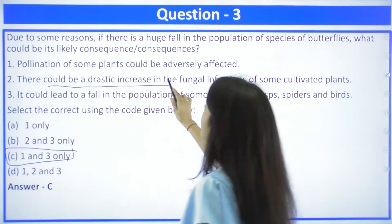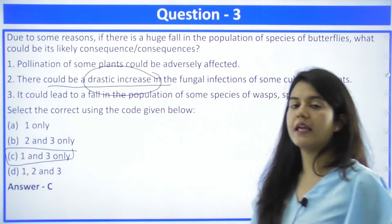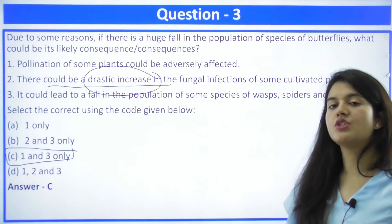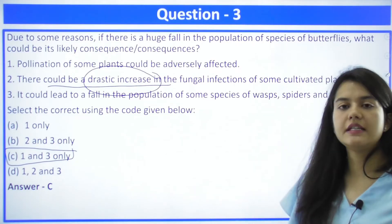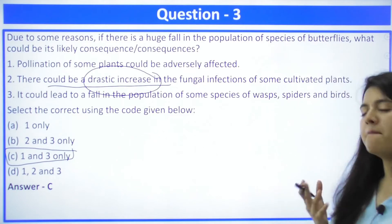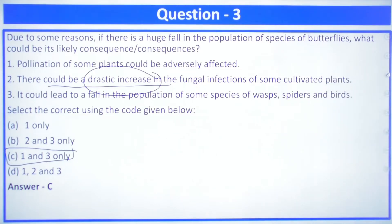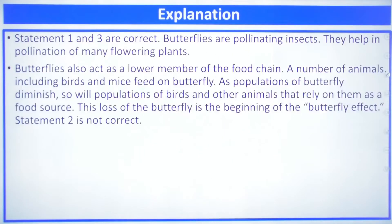The second statement about a drastic increase is incorrect. When you encounter extreme statements in UPSC questions, they are always wrong. You might see a mild increase in fungal infections, but there would not be a drastic increase. So the second statement is ruled out. It was a very easy question — if you apply common sense, you can answer it.